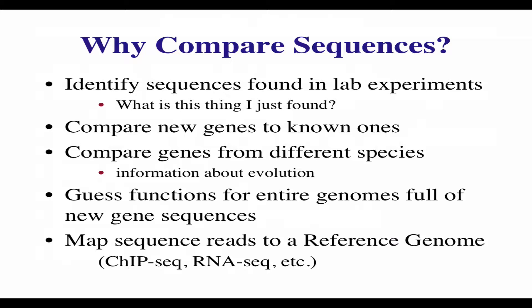Why is it important to compare sequences? Frequently the output of a laboratory experiment is some sort of sequence data — DNA, occasionally protein if you're doing proteomics. Very often you want to ask a basic question: what is this thing that I just found when my output is some sort of DNA sequence? You might want to compare new genes to ones already known, compare genes from different species, or be involved in evolutionary analysis. Sequence alignment can also be used to predict the function of an entire genome full of new sequences, which is increasingly common.